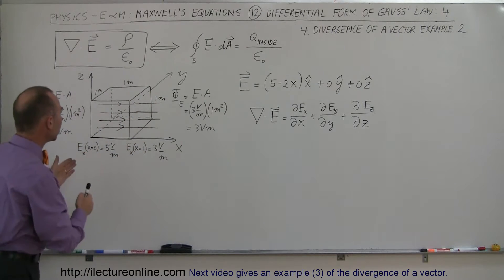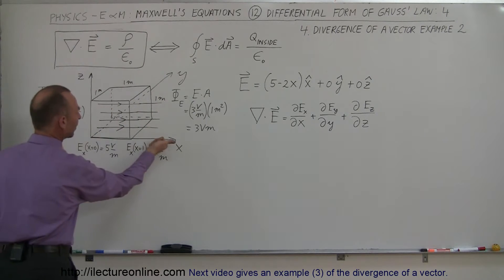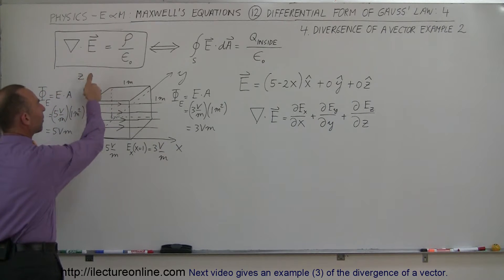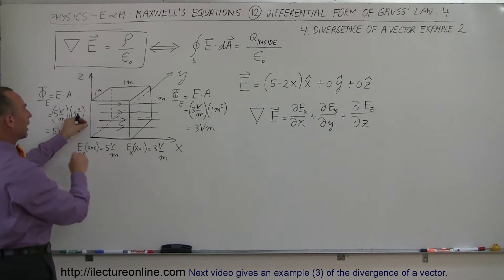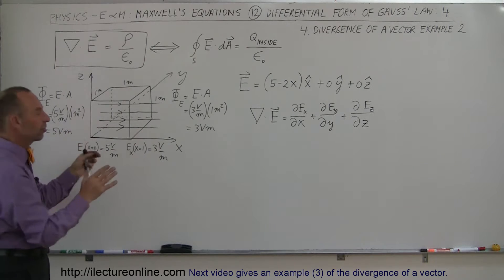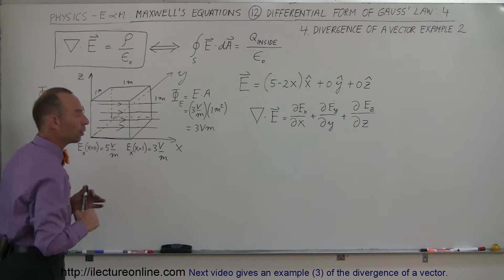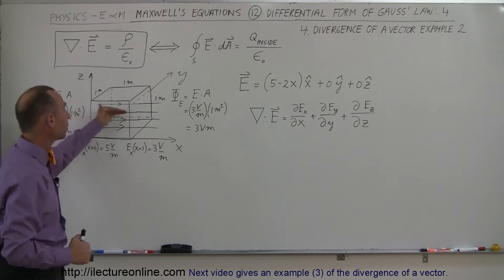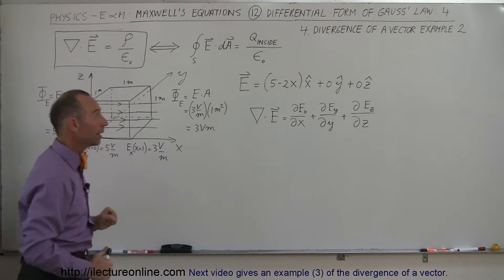Here I have the XYZ coordinate system: the X axis to the right, the Y axis into the board, and the Z axis up. Notice that if we turn the whole thing around this way, it looks like our typical coordinate system, but I wanted the X direction to be in the direction of the board, which means that we have an electric field from left to right which changes according to this equation right there.